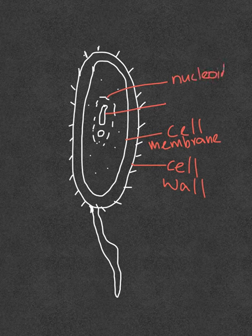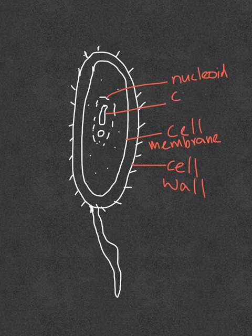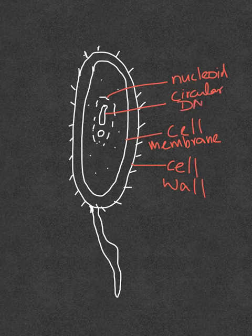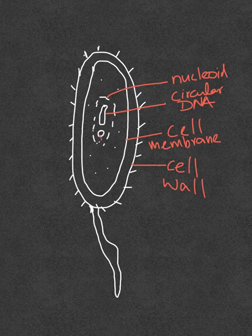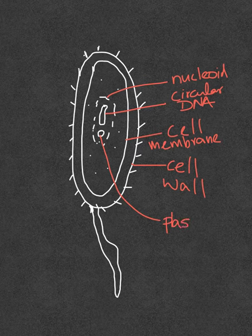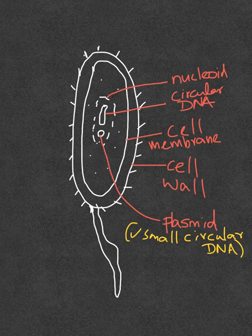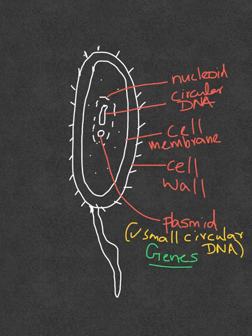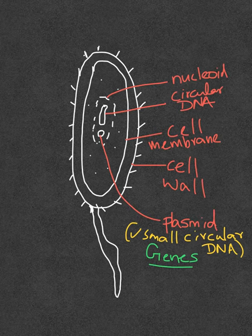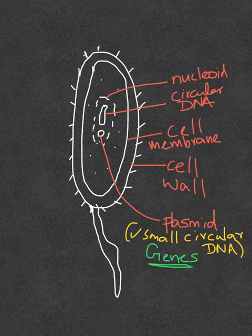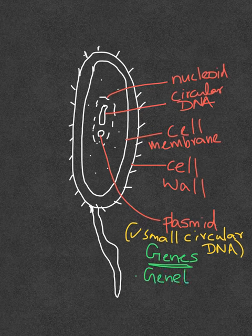The nucleoid contains the circular double-stranded DNA, and this area also contains something known as the plasmid. The plasmid also contains a small circular DNA. The plasmid contains several genes, which are segments of DNA that contain genetic information. The genes that are present in the plasmid have a variety of applications in genetic engineering and gene therapy.